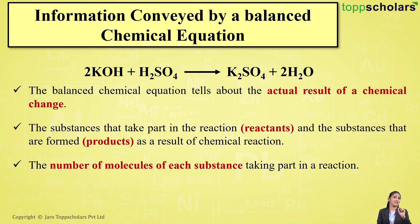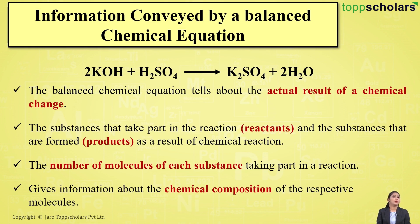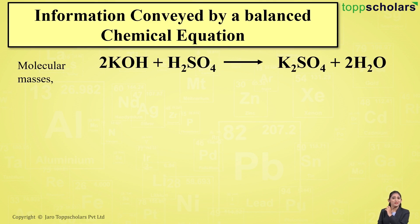The balanced chemical equation also gives you information about the chemical composition of the respective molecules. Furthermore, this balanced chemical equation helps you to calculate the molecular mass. For example, in this reaction, let's calculate the molecular mass of each reactant and each product formed.